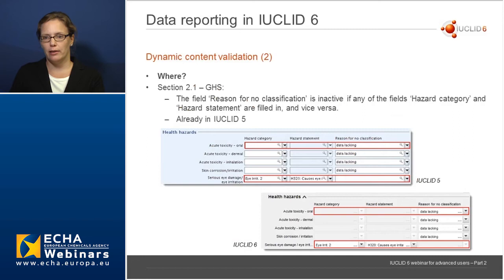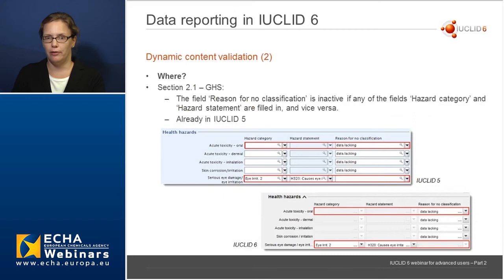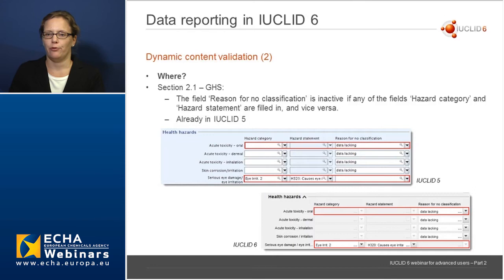An example of dynamic content validation is section 2.1 on the GHS, where the field 'reason for no classification' will be inactive if any of the fields 'hazard category' or 'hazard statement' are filled in, or vice versa. This feature was already in place in IUCLID 5, so it's not new, but it's good to keep in mind. You cannot have fields active both for classification information and the reason for no classification.